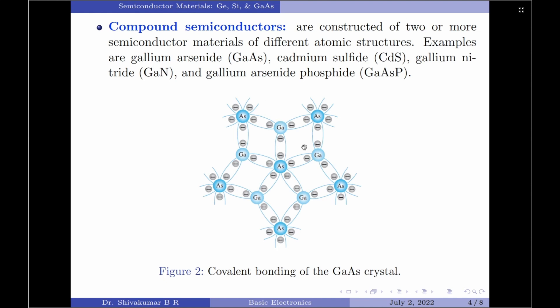Examples of compound semiconductors are gallium arsenide, cadmium sulfide, gallium nitride, and gallium arsenide phosphide.